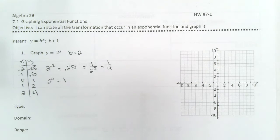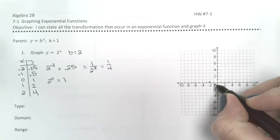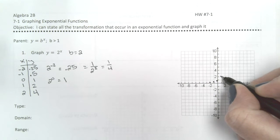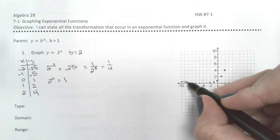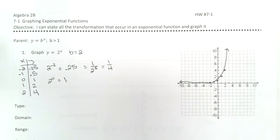Negative 2, just estimate a quarter as best you can. 0, 1, 1, 2, and 2, 4. So here's what this graph looks like.